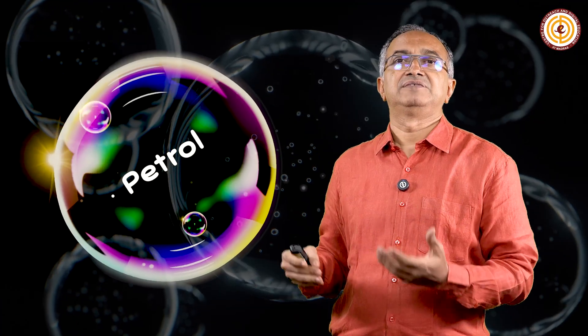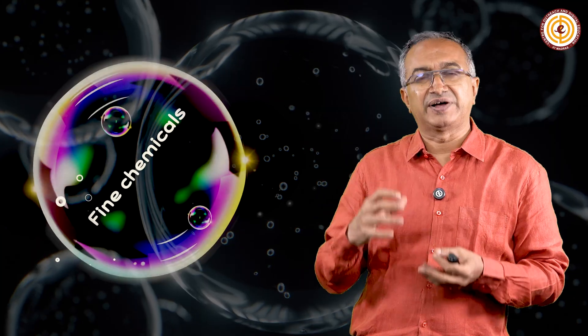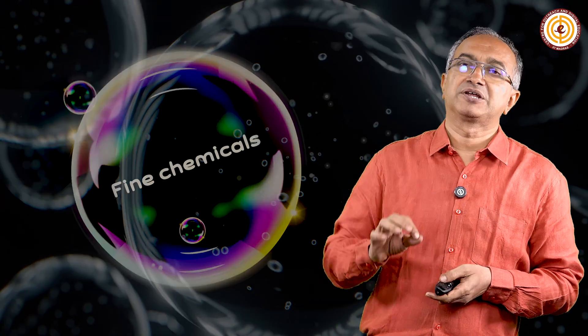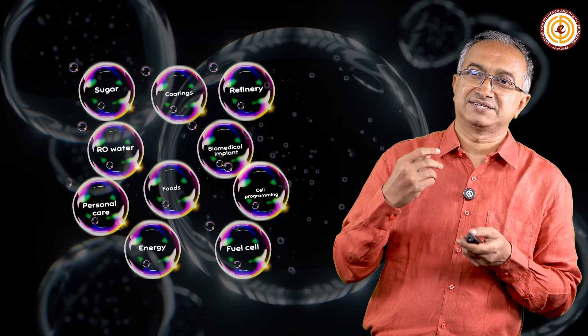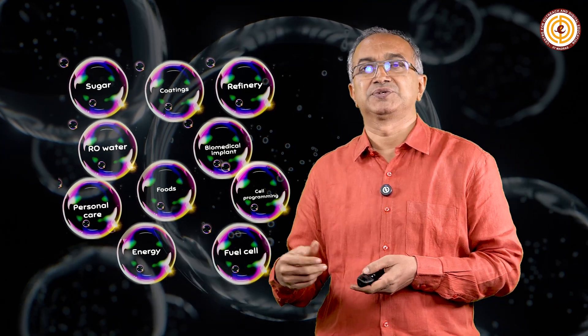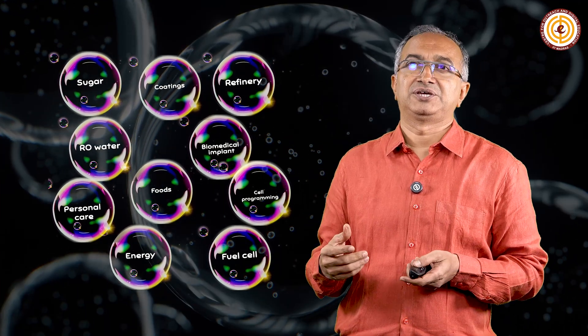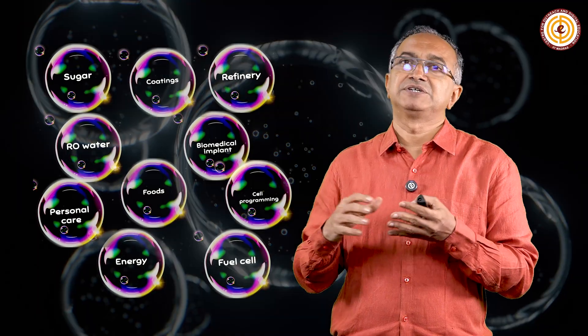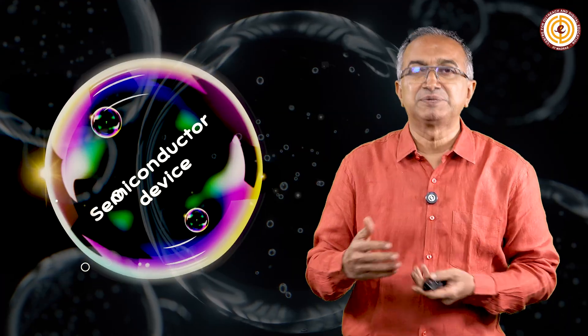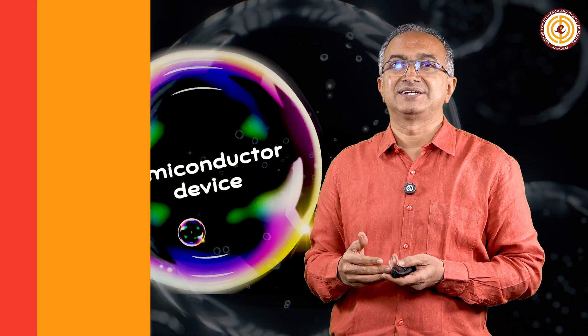Refineries give us petrol which drives our transportation needs. Then of course there are very fine chemicals which are used in much smaller quantities but are very crucial — as drug molecules, as perfumes, or any other functional molecules. We have examples of very traditional products such as fertilizers which have been around for a long time, and then semiconductor processing which has become important in recent decades.